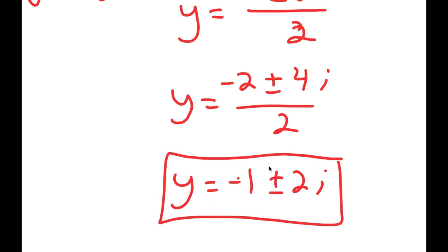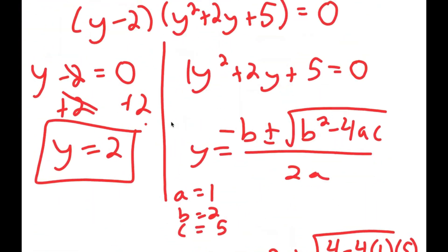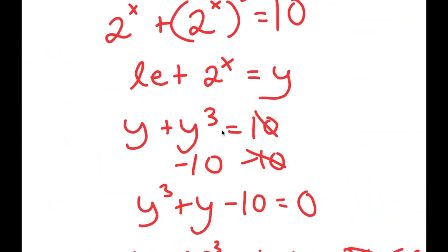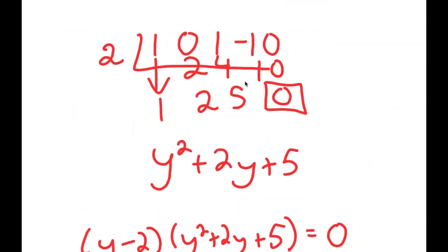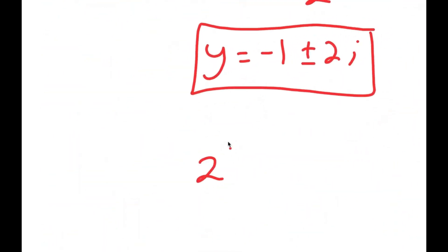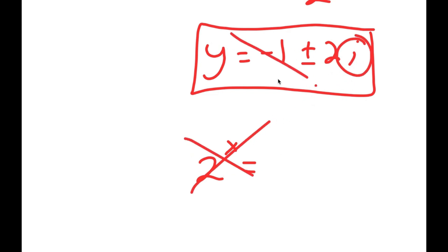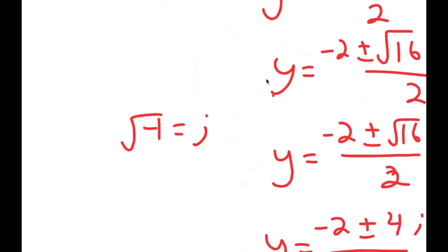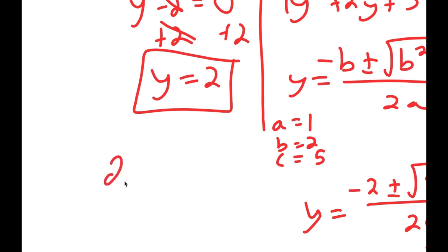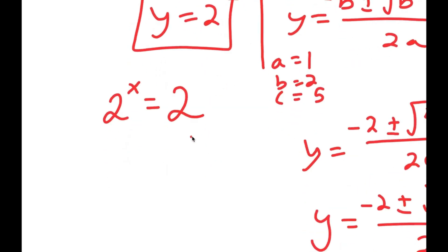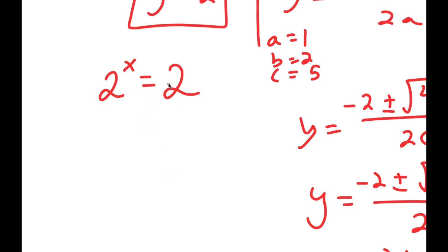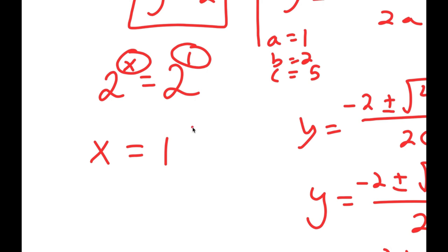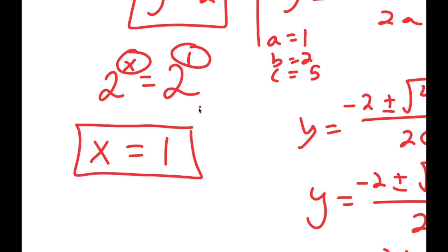These are two more solutions for y, giving three total. But remember, we let 2 to the power of x equal y. Since 2 to the power of x cannot equal an imaginary number, those solutions are invalid. My only valid equation is 2 to the power of x equals positive 2. I can rewrite 2 as 2 to the power of 1, and since the exponents are equal, x is equal to 1. So x equals 1 is my solution.